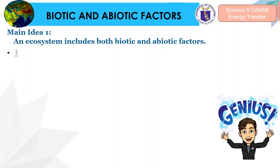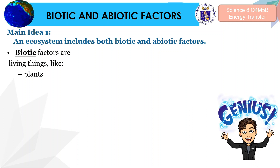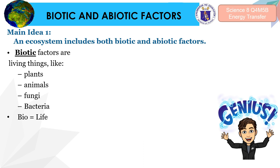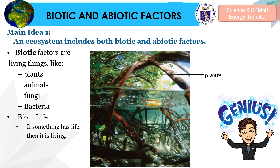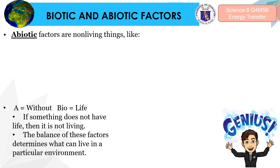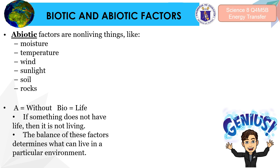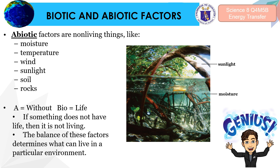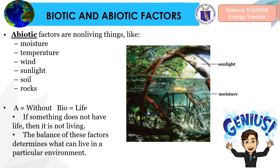When we talk about biotic factors, this includes living things such as plants, animals, fungi, and bacteria — because 'bio' means life. So if something has life, then it is living. On the other hand, when we talk about abiotic factors, this refers to non-living things such as moisture, temperature, wind, sunlight, soil, and rocks. The prefix 'a' means without, so 'abiotic' means without life. The balance of these factors determines what can live in a particular environment.